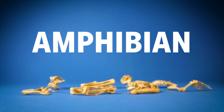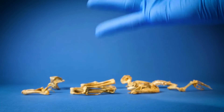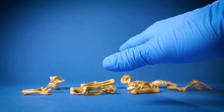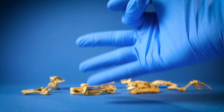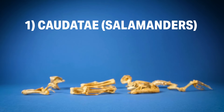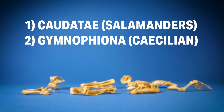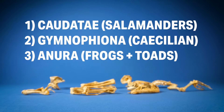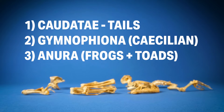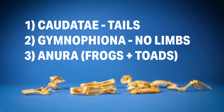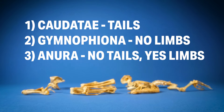When splitting up amphibians, they group together in three orders — all amphibians are in one of these three. You have Caudata, which are salamanders; Gymnophiona, which are caecilians; and Anura, which are frogs and toads. All of these have distinguishing features: salamanders have tails, caecilians don't have any limbs, and frogs and toads have no tails but do have limbs.